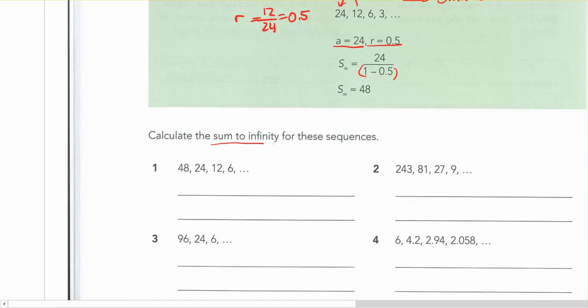So here, if we're just asked the sum to infinity, again, a is equal to 48. Your r here is going to be 24 over 48. That's going to be equal to 0.5. So similar to what we had here, just a different number on top. Sum to infinity, a is 48 divided by 1 minus 0.5. And you're going to get 96. That's your sum.